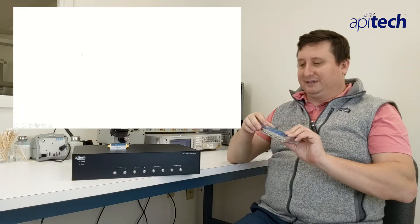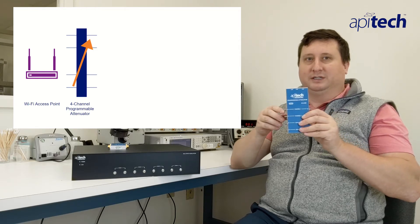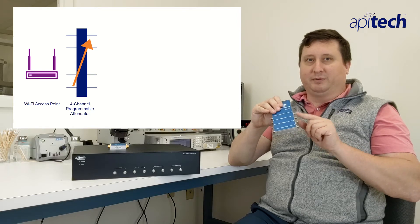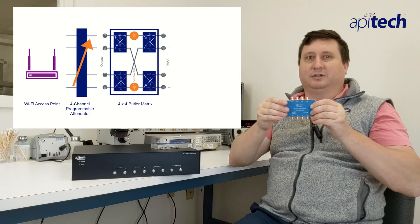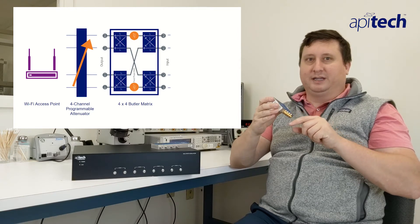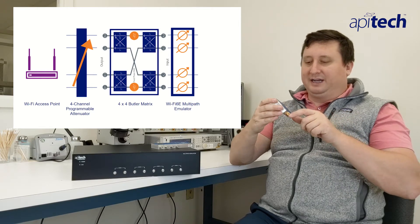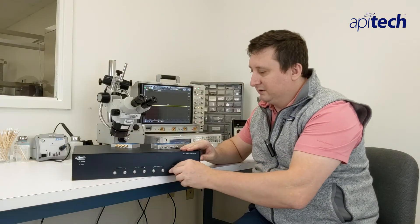Now let's look at how the multipath emulator is typically used in a test system. First, the output of each Wi-Fi access point connects to the input of the multichannel attenuator, such as the 4401 series shown here. Each output from the multichannel programmable attenuator connects to the input of a Butler matrix, such as the 8401E series shown here. Each output of the Butler matrix is equal to the inputs of the Butler matrix combined, offset by a fixed phase shift. Finally, each output from the Butler matrix connects to the input of the multipath emulator at each channel.